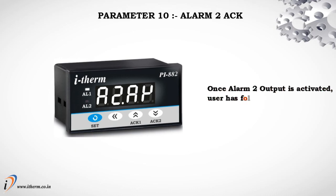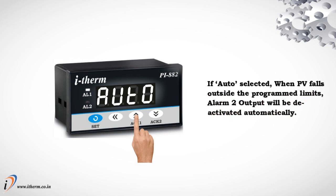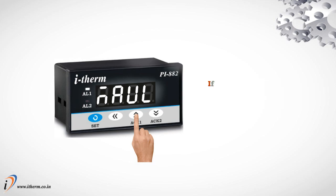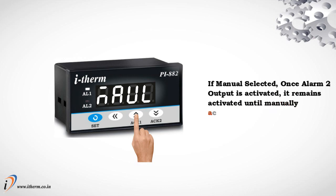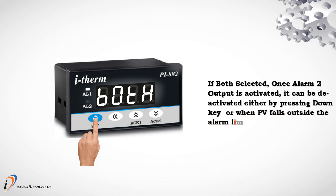Parameter 10: Alarm 2 Acknowledge. Once alarm 2 output is activated, the user has three options to deactivate it. If Auto selected, alarm 2 output will be deactivated automatically when process value falls outside the programmed limits. If Manual selected, it remains activated until manually acknowledged by the Down key. If Both selected, it can be deactivated either by pressing the Down key or when process value falls outside the alarm limits.